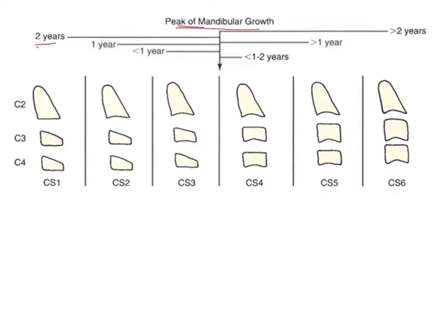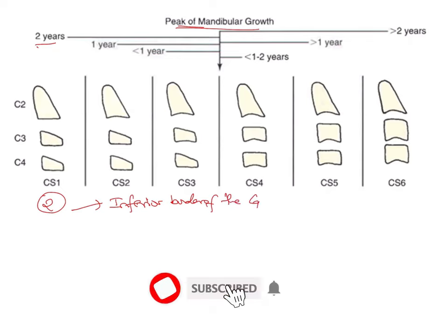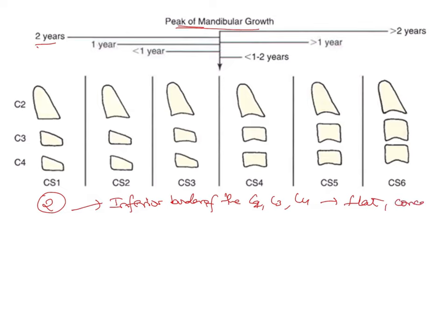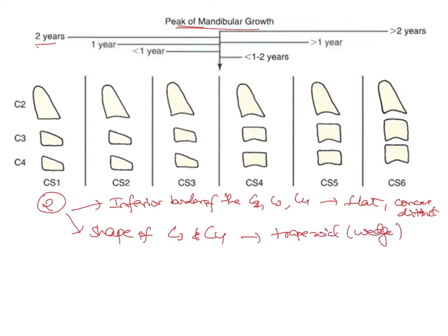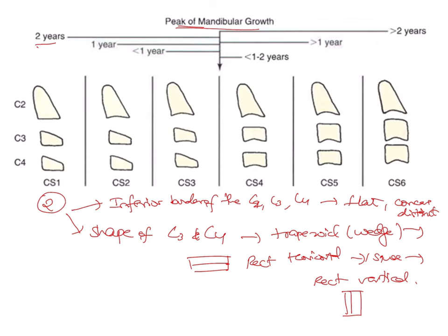When assessing the CVMI, there are two very important characteristic features to note. First is the inferior border of C2, C3, and C4, which goes from flat to slightly concave to distinctly concave. The second thing to keep in mind is the shape of C3 and C4, which goes from a trapezoid or wedge shape, to rectangular horizontal, to square, to rectangular vertical. In rectangular horizontal the length is more horizontal, whereas in rectangular vertical the length is more vertical.